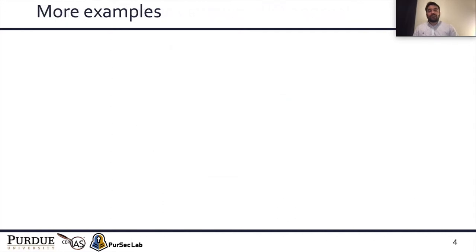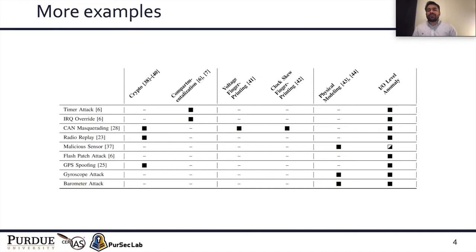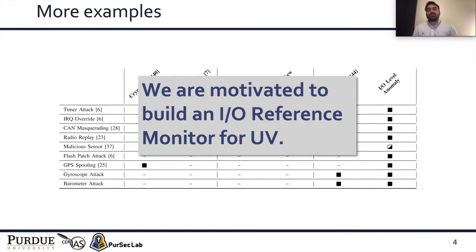Similarly, we conducted several other attacks on UVs, and for most of the attacks we observed an IO-level anomaly. The key thing to note is that there might be existing defenses for some of those attacks; however, none of these defenses actually cover all of these attacks. Although not a complete survey of UV attacks, this was enough to convince us that we need to build an IO reference monitor for UVs. And that led to M2Mon.